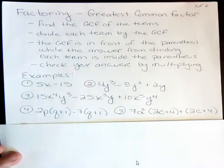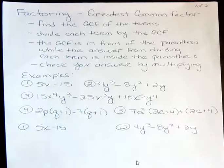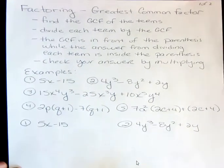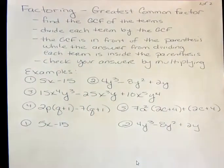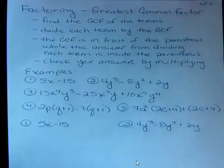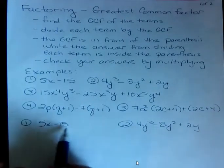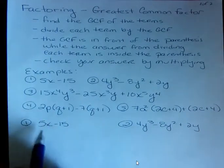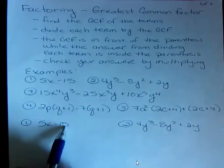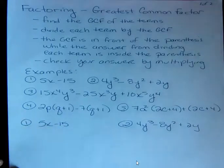So let's look at the first couple of examples that I have listed there. So what's the common factor for 5x minus 15?